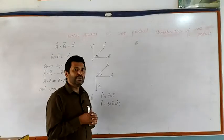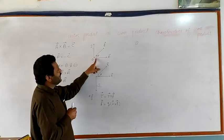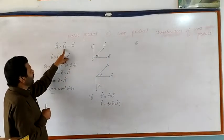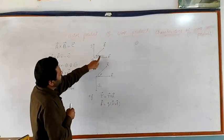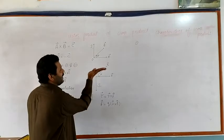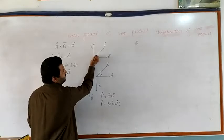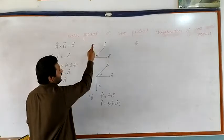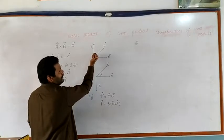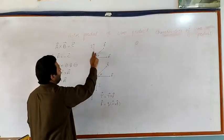In the right-hand rule technique, we will join the tail of these two vectors. We have to multiply Vector A by Vector B. The direction of theta is from A to B. We will rotate the fingers of our right hand from the first vector to the second vector, then open the thumb. The thumb will indicate the direction of vector C. The resultant vector C is perpendicular to the plane of A and B.